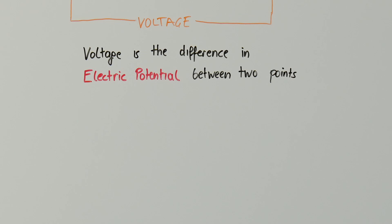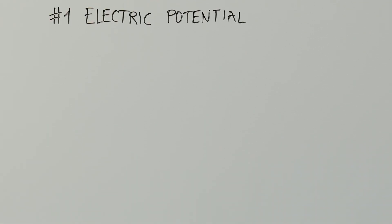So, let's break it down. First, what is an electric potential? The electric potential is the work needed to move a charged particle of one coulomb from infinity to a certain distance from another charged particle.